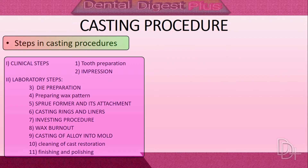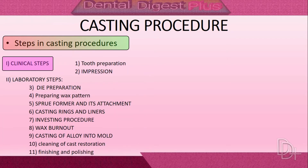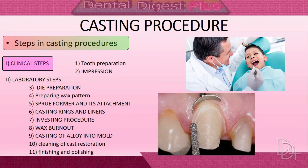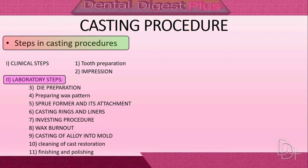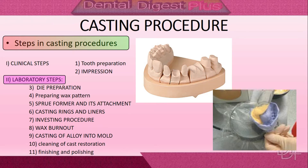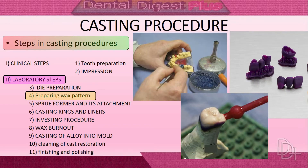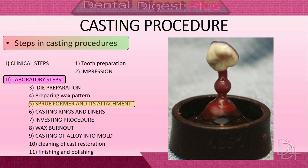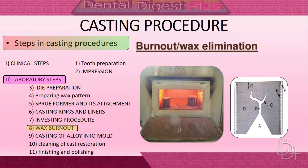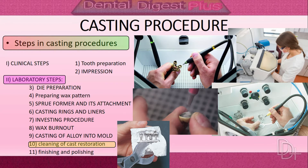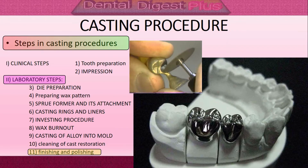The steps of casting procedures are divided into clinical and laboratory steps. Clinical steps include tooth preparation and taking an impression of the prepared tooth. Laboratory steps are: die preparation, preparation of wax pattern, sprue former and its attachment, casting rings and liners, investing procedure, wax burnout, casting of alloy into the mold, cleaning of cast restoration, and finishing and polishing.